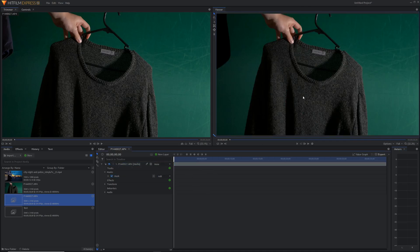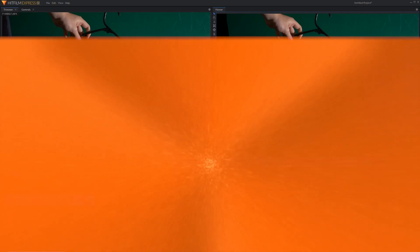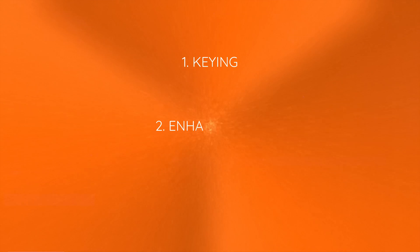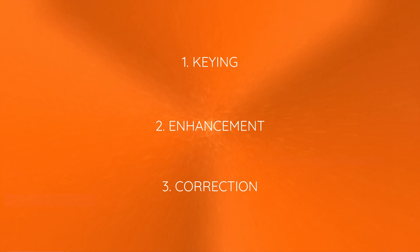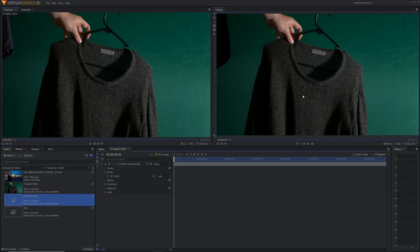Now let's do the green screening. There are three real steps to the process. The first is keying — getting rid of the green. The second is enhancement — making sure that our key looks good. The third is correction — making sure our foreground looks like the background. We're going to go through each of these steps today, and each of them are equally important. Don't just do the keying; make sure you also do the enhancement and the correction to get a good-looking key.